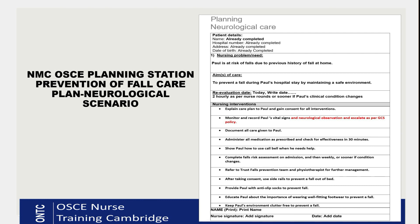Paul was admitted after a fall, so he's at high risk of having a fall in hospital as well. Our nursing need is written clearly: 'Paul is at risk of fall due to previous history of falls at home.' For the aim of care, since the risk is that he may fall, our aim should be to prevent a fall — to prevent a fall during Paul's hospital stay by maintaining a safe environment.